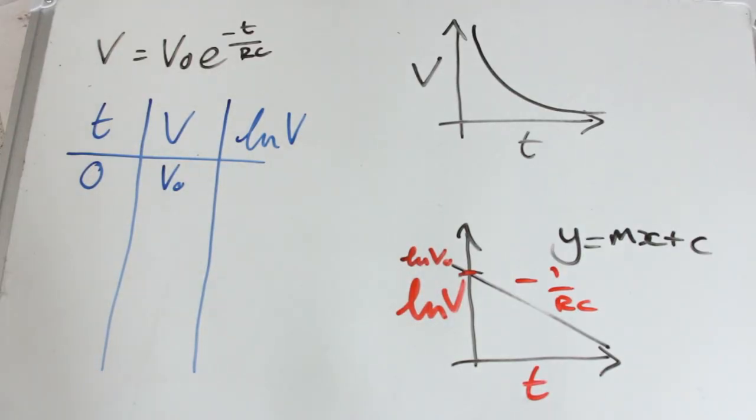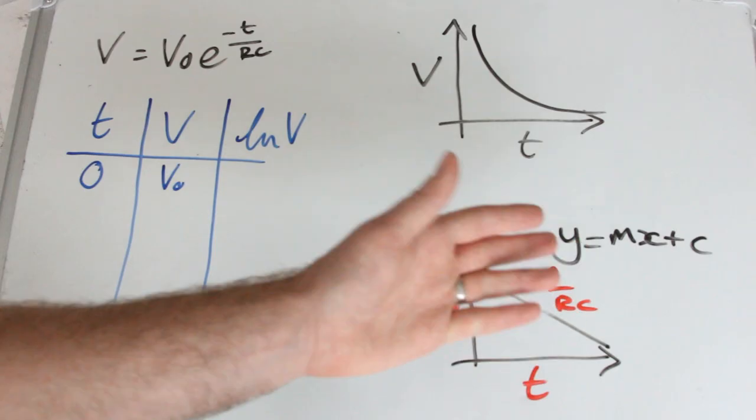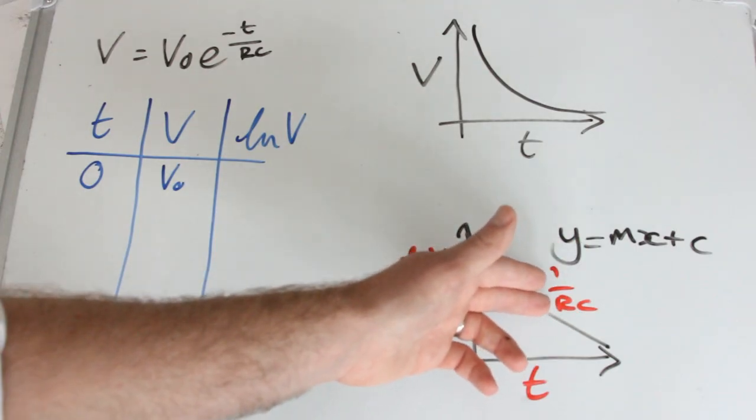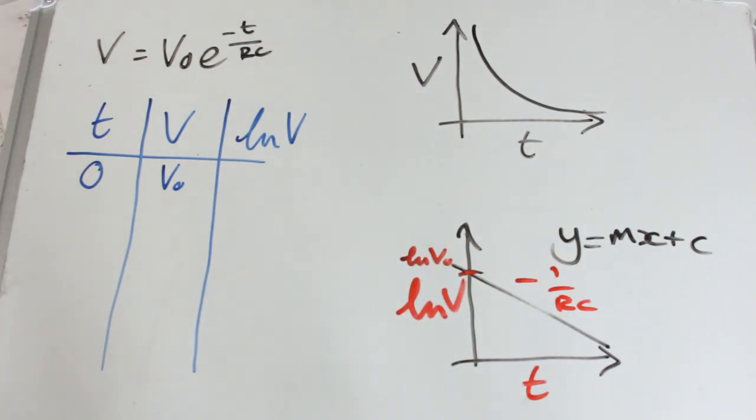Yep, happy with that? And that allows us to do calculations and check our values for resistance. Well, in practice you can get resistance using an ohmmeter, or check the manufacturer's values of capacitance, which would be an interesting comparison to work out what their tolerance is.